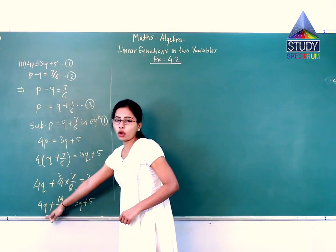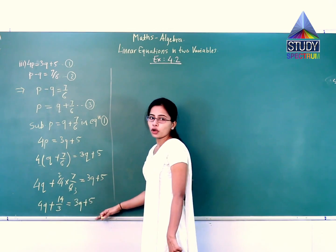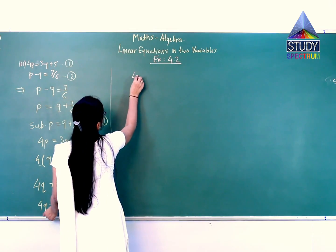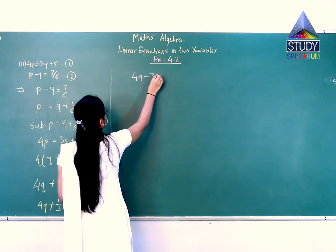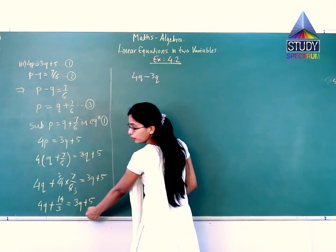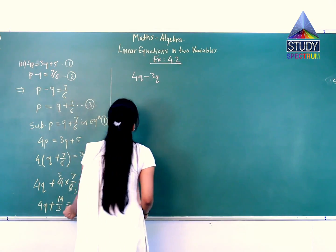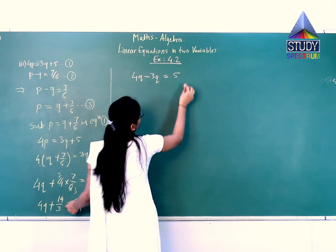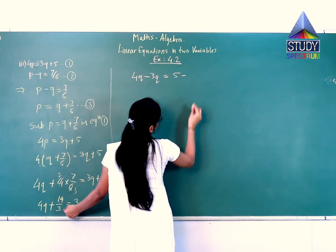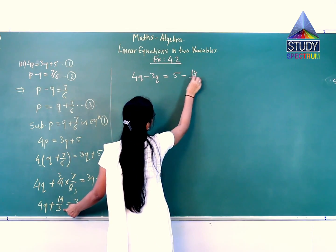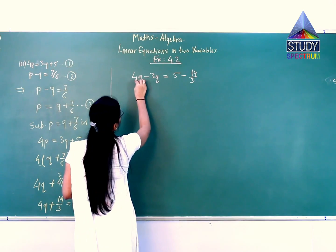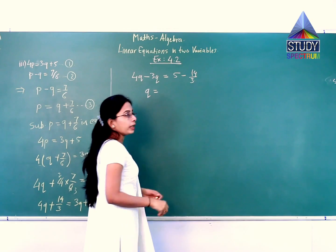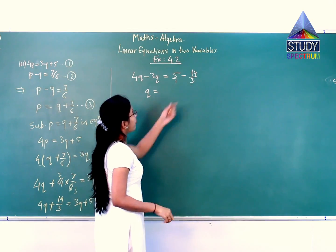We will take Q on one side and numbers on the other side. So, 4Q minus 3Q — because 3Q will get transferred to the left-hand side and become negative — and 5 is positive, and plus 14 upon 3 will get subtracted, so it will be minus 14 upon 3. 4Q minus 3Q gives 1Q. No need to write 1. Now let us calculate these two fractions.